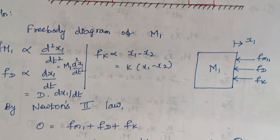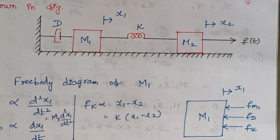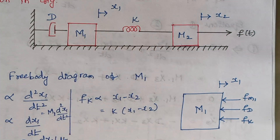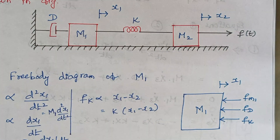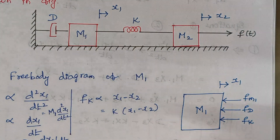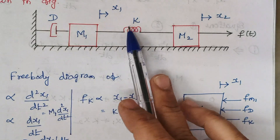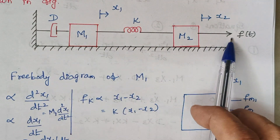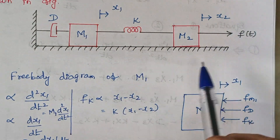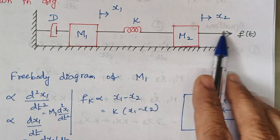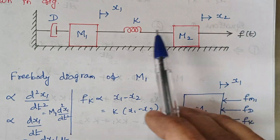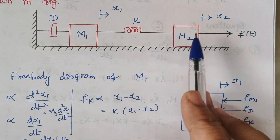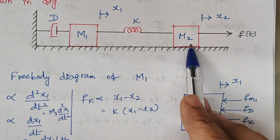Next, consider the free body diagram of mass m2. Just count the elements connected with m2 — that is k and f(t). So f(t) is the applied force and the opposing forces will be produced by k as well as by m2 itself.